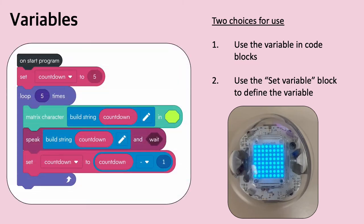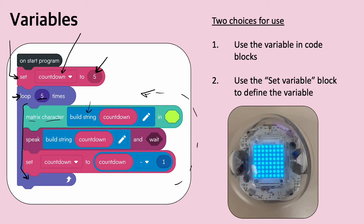Here's a simple program that uses variables. I created a variable called 'countdown.' When the program starts, I use the set variable block to set the countdown variable to the number five. Then I have a loop that runs five times. The first thing it does — just breaking down the code — is display a single matrix character on the LED matrix. I built a string and inside that string I put the number countdown, which I set to five.